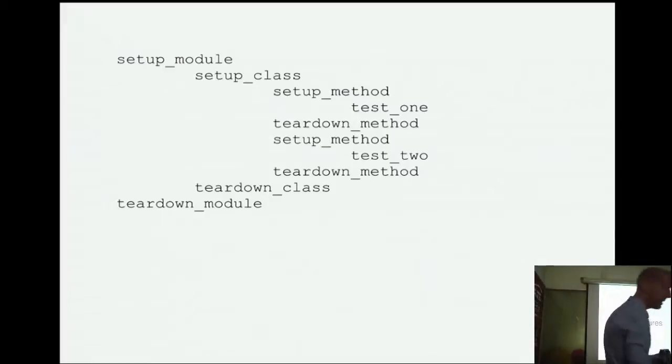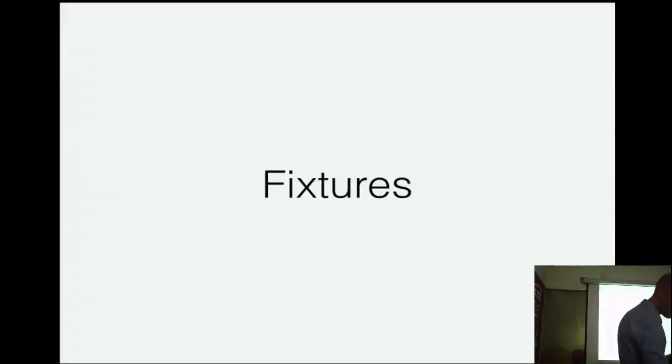What this looks like if it runs is this. I just made an example that kind of showed you the nesting of it all, right? So, there's only one module here. There's only one class. Setup method, done run once, test_one, then teardown one. Then setup_method, done run again, test_two. Then that got teared down. Then teardown_class and module. Okay. But, PyTest doesn't want you to do it this way. PyTest wants you to use this thing called fixtures.